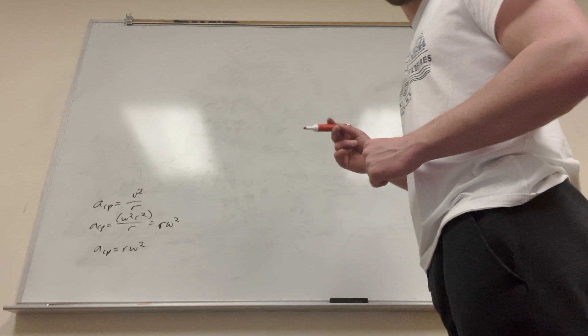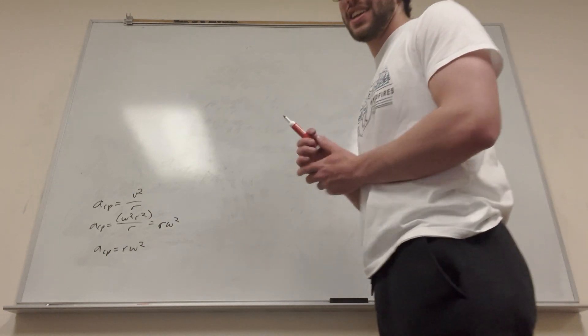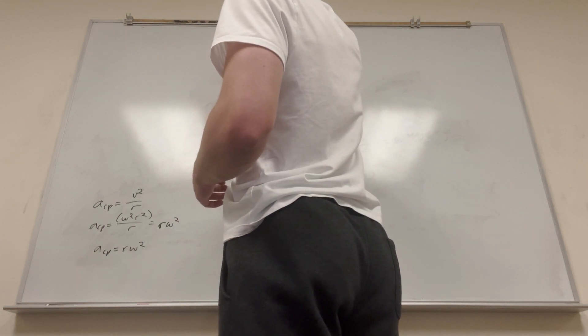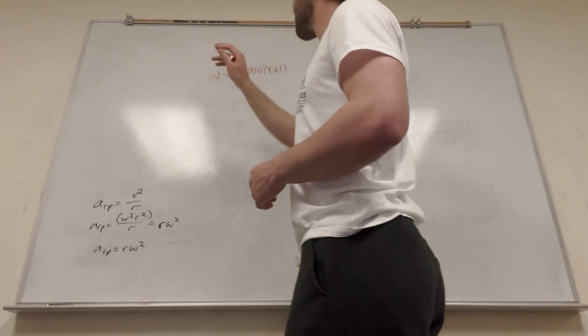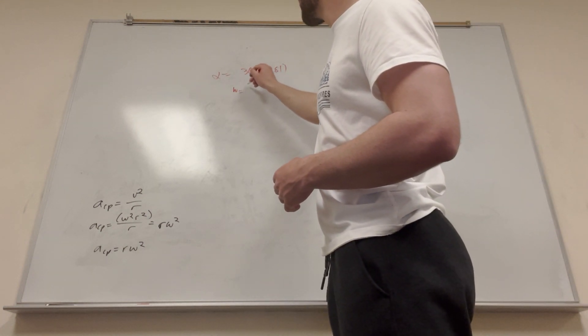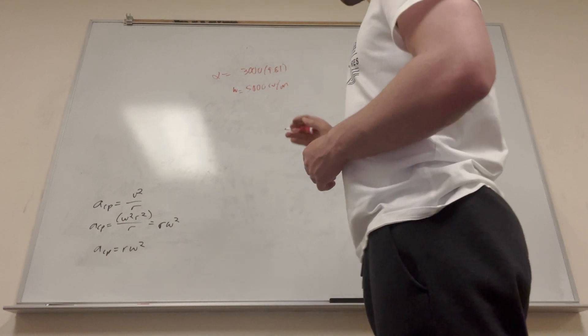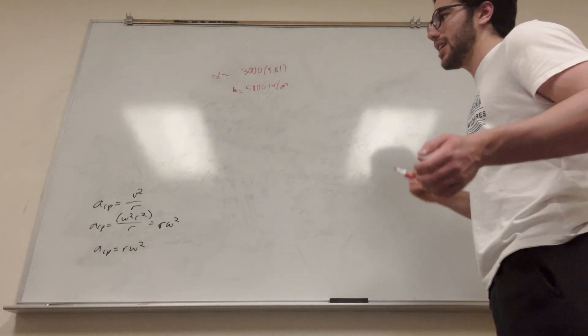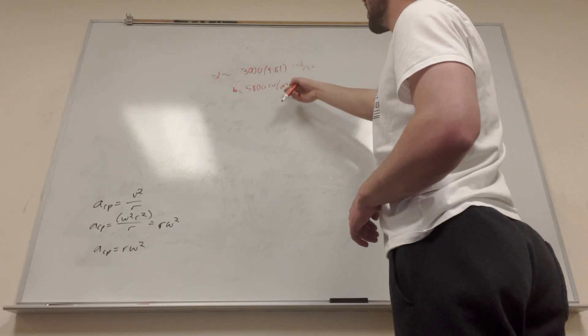So we have our angular centripetal acceleration. It's 3,000 times 9.81, that's our angular acceleration, and it gives us a w of 5,000 rev a minute. But we need to convert that, because we need it in radians a second, because this is radians a second squared, and this is rev a minute.